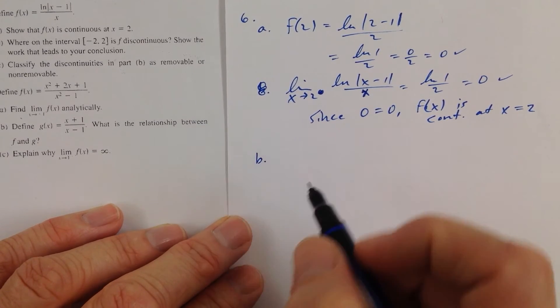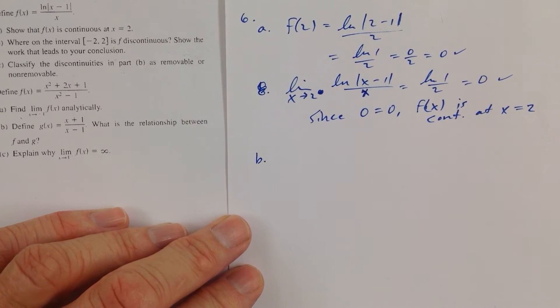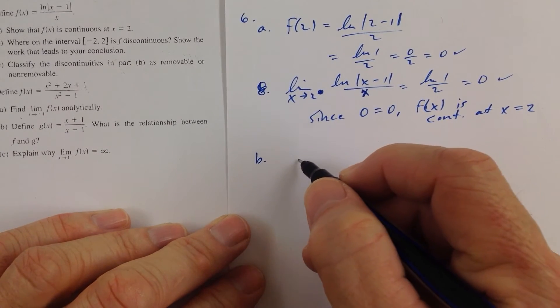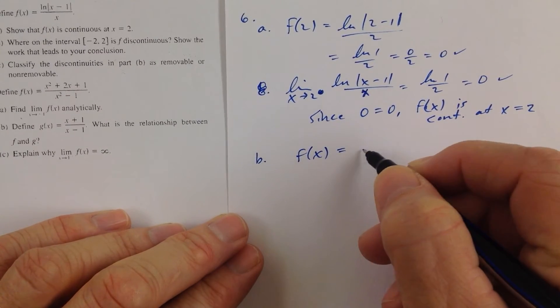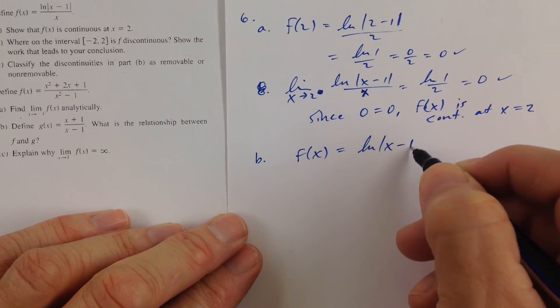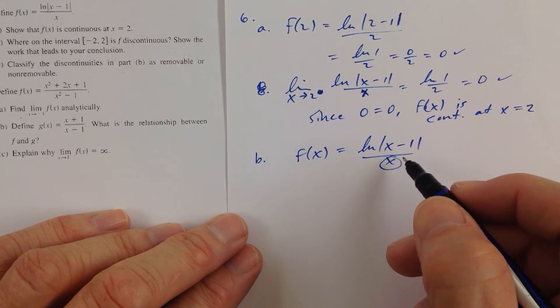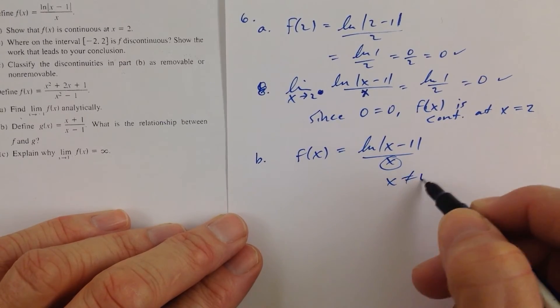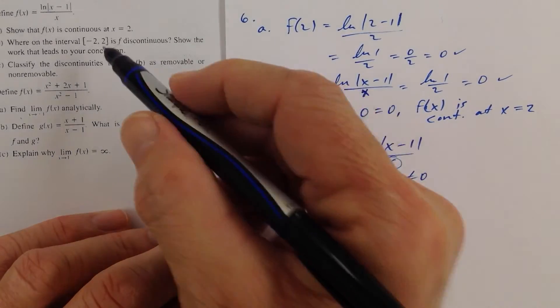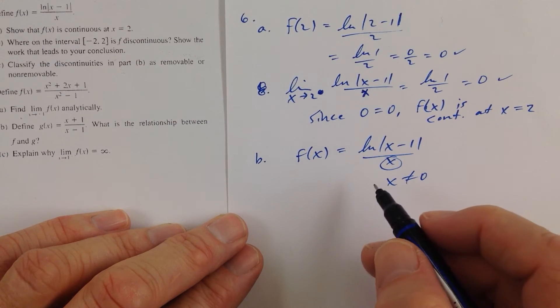Part B, it says where in the interval negative 2 to 2 is f discontinuous? Well, we can't take the log of 0. Let's look at f of x here, ln of the absolute value of x minus 1. Well, first of all, x is not allowed to equal 0, and that's on the interval from negative 2 to 2.